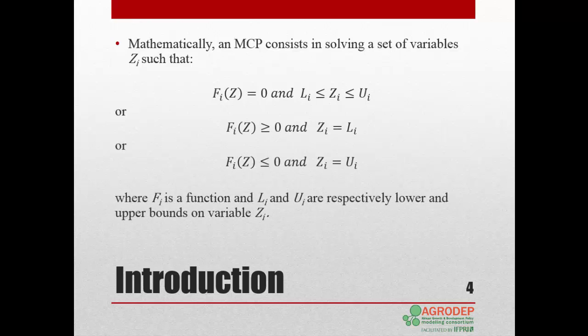Mathematically, we can express an MCP as follows. We want to solve for a set of variables z_i given these conditions: the function f_i equals 0 when z is between lower bound L_i and upper bound U_i; or f_i is greater than or equal to 0 when z_i reaches its lower bound; or f_i is less than or equal to 0 when z_i reaches its upper bound. Here f_i is a function and L_i and U_i are respectively the lower and upper bounds of variable z_i.